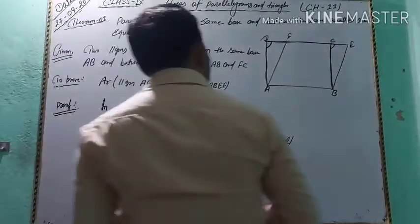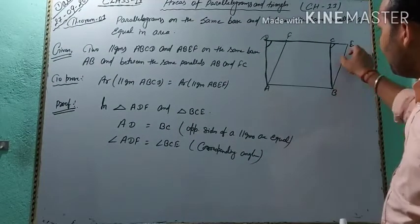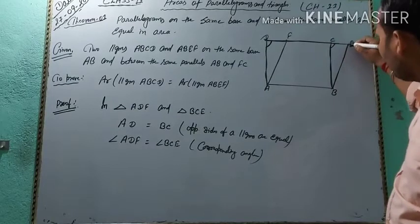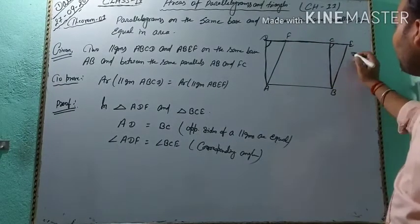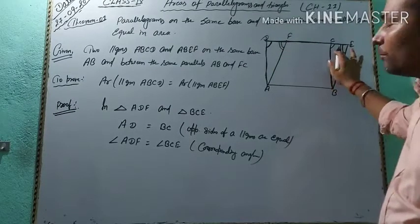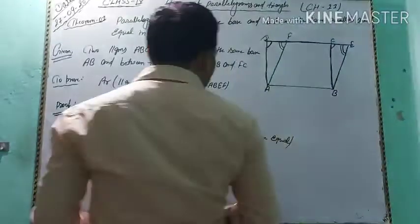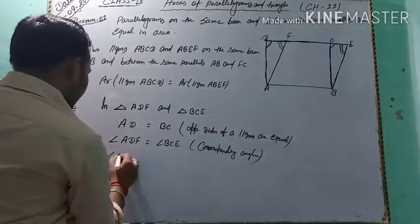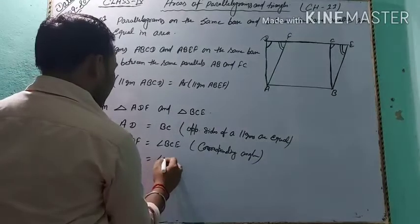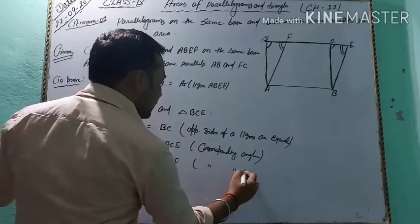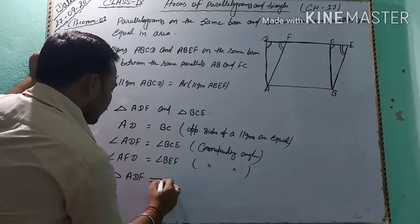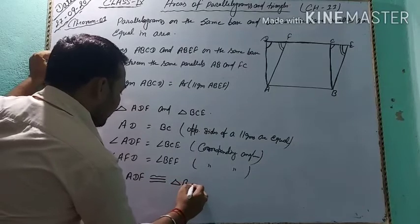And students, in parallelogram ABEF, AF is parallel to BE. And if AD is the transversal, then angle BEF is equal to angle AFD from the corresponding angles. So angle AFD is equal to angle BEF from the corresponding angles. Therefore, triangle ADF is congruent to triangle BCE.